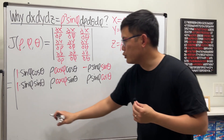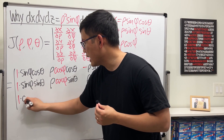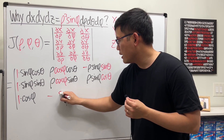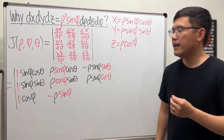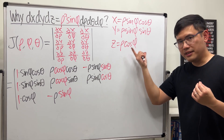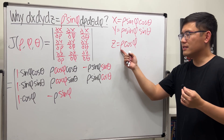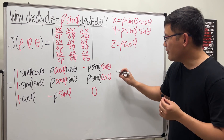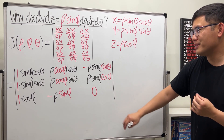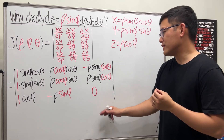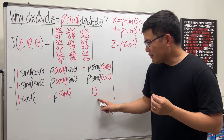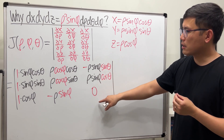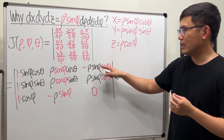For the z equation: partial with respect to ρ gives cosφ. Partial with respect to φ gives −ρsinφ. Partial with respect to θ — there is no θ in z = ρcosφ, so it is treated as a constant and the derivative is zero. We have a zero, which is very helpful. For a 3×3 determinant, we will take advantage of this zero and use cofactor expansion along the last column.